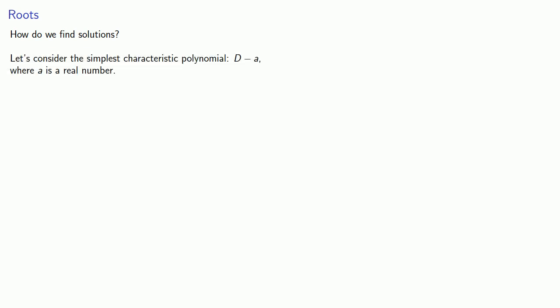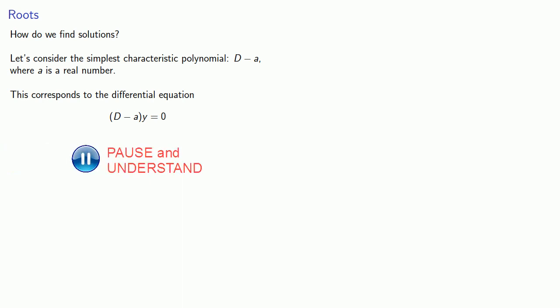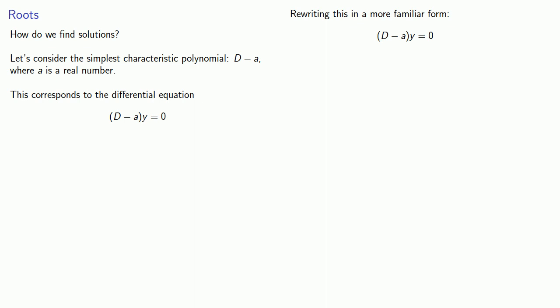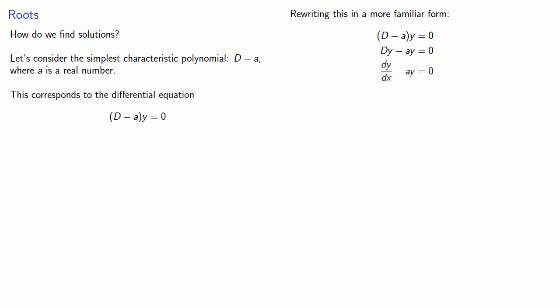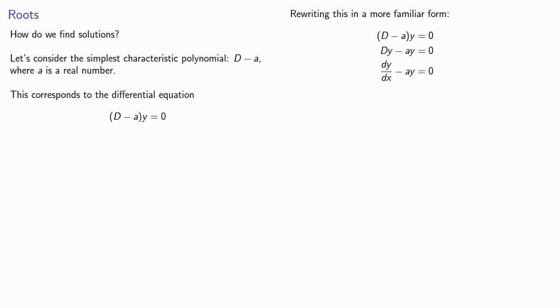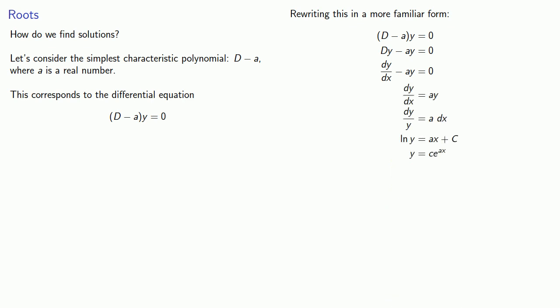Let's consider the simplest characteristic polynomial D minus A, where A is a real number. This corresponds to the differential equation D minus A applied to Y equals zero. Rewriting in a more familiar form, this is the differential operator applied to Y minus A times Y, or as a differential equation: DY over DX minus AY equals zero. This is a separable differential equation, so we'll solve it. The solution is Y equals Ce to the power AX.